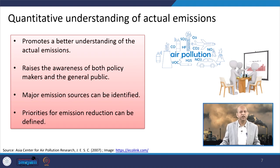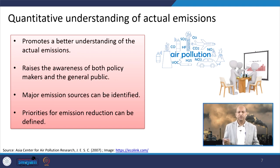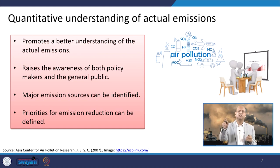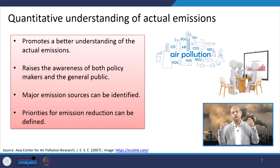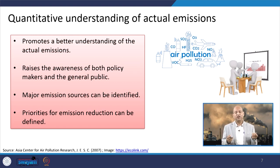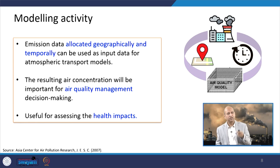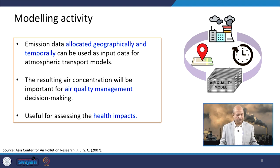Major emission sources can be identified, and priorities for emission reduction can be defined by the emission inventory — it tells you which sector or activity is emitting the maximum of a particular pollutant. Better to target that sector; otherwise if you distribute money across each sector, the improvement in air quality will not be visible because you are not tackling the sector predominantly responsible. Emission inventory helps in the comparison of different sources.